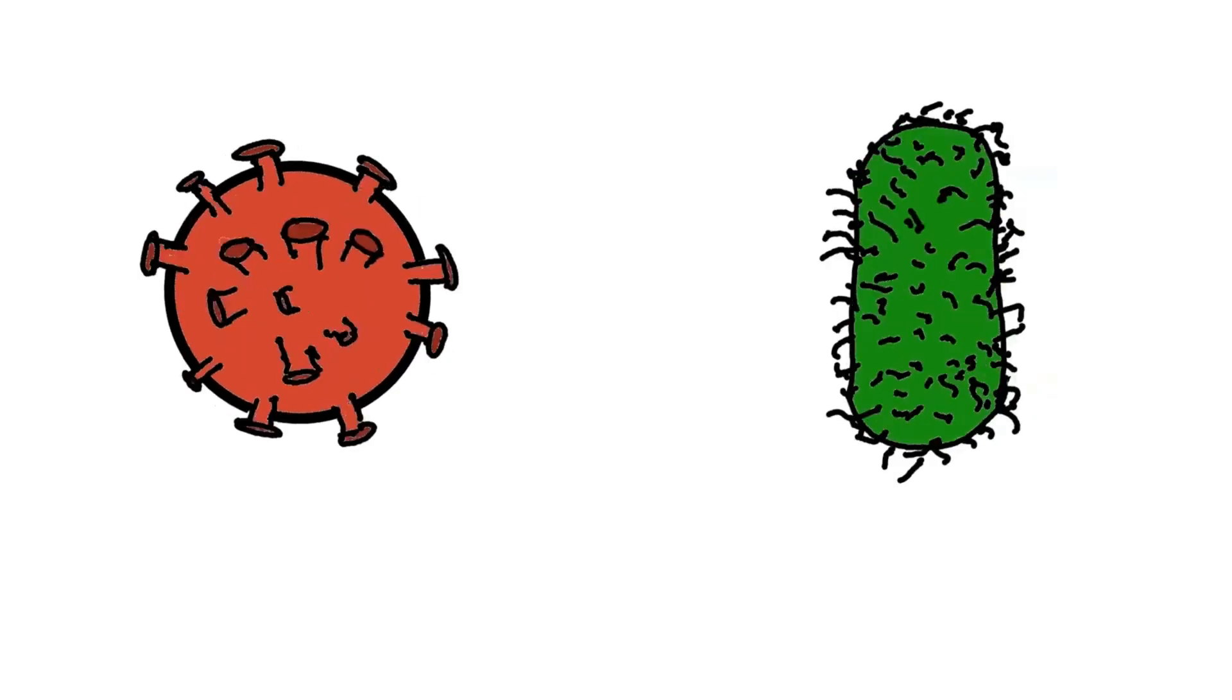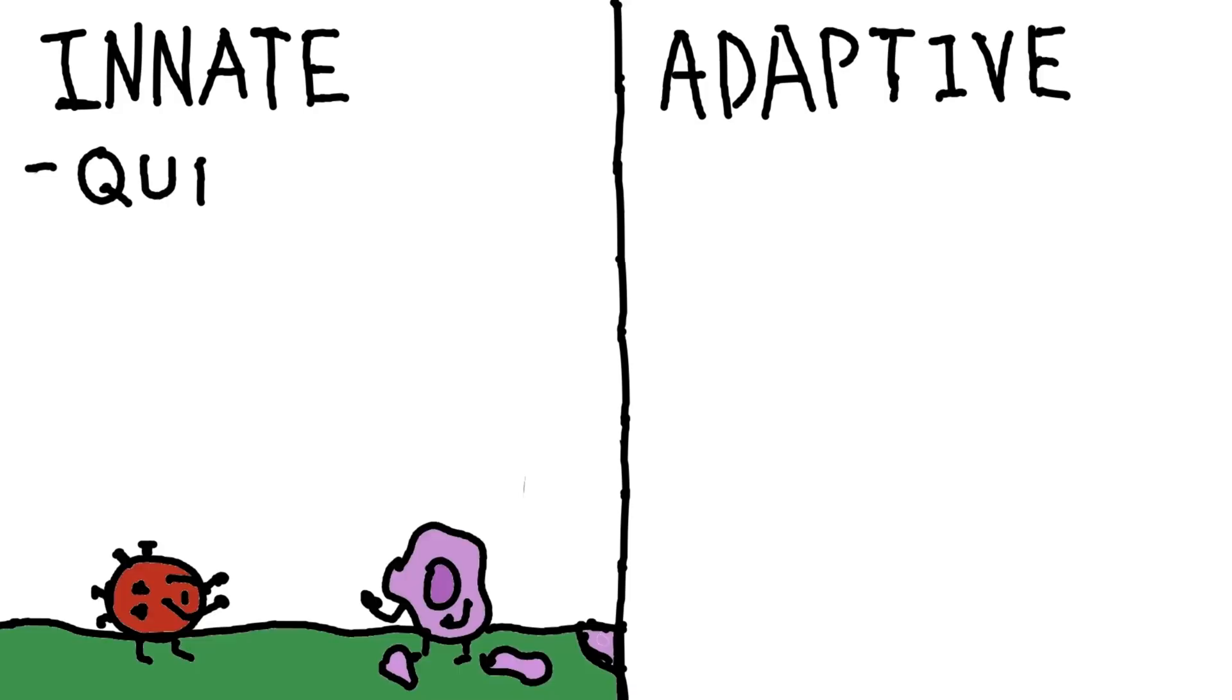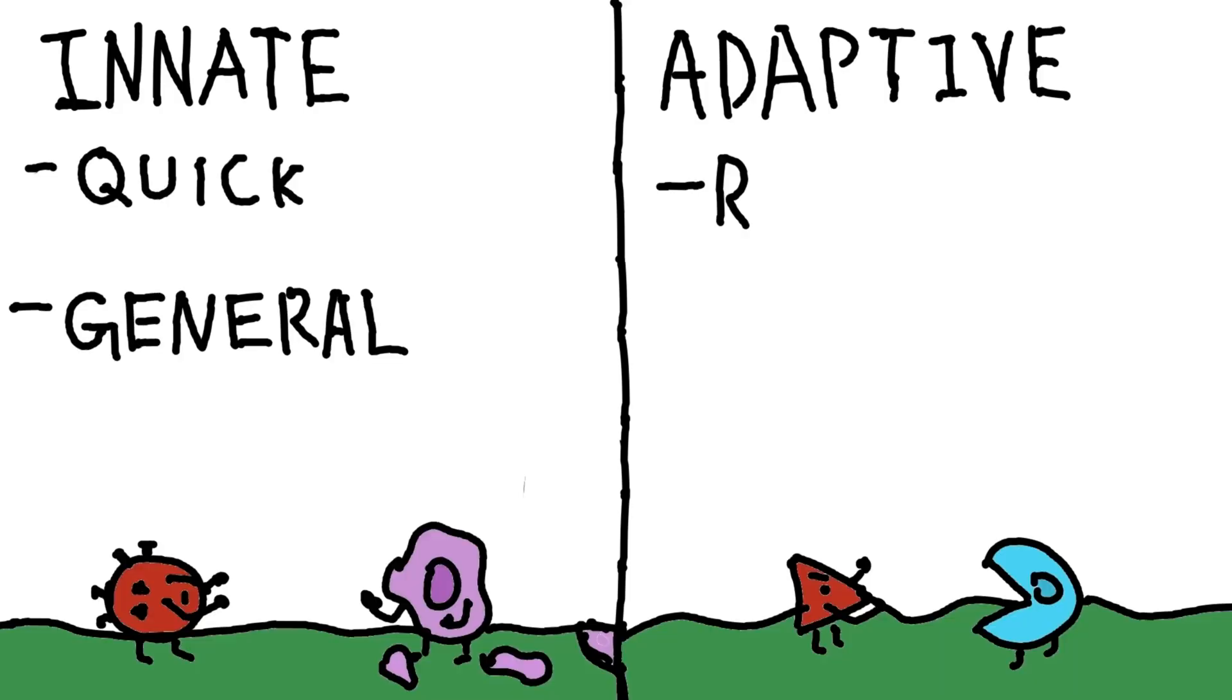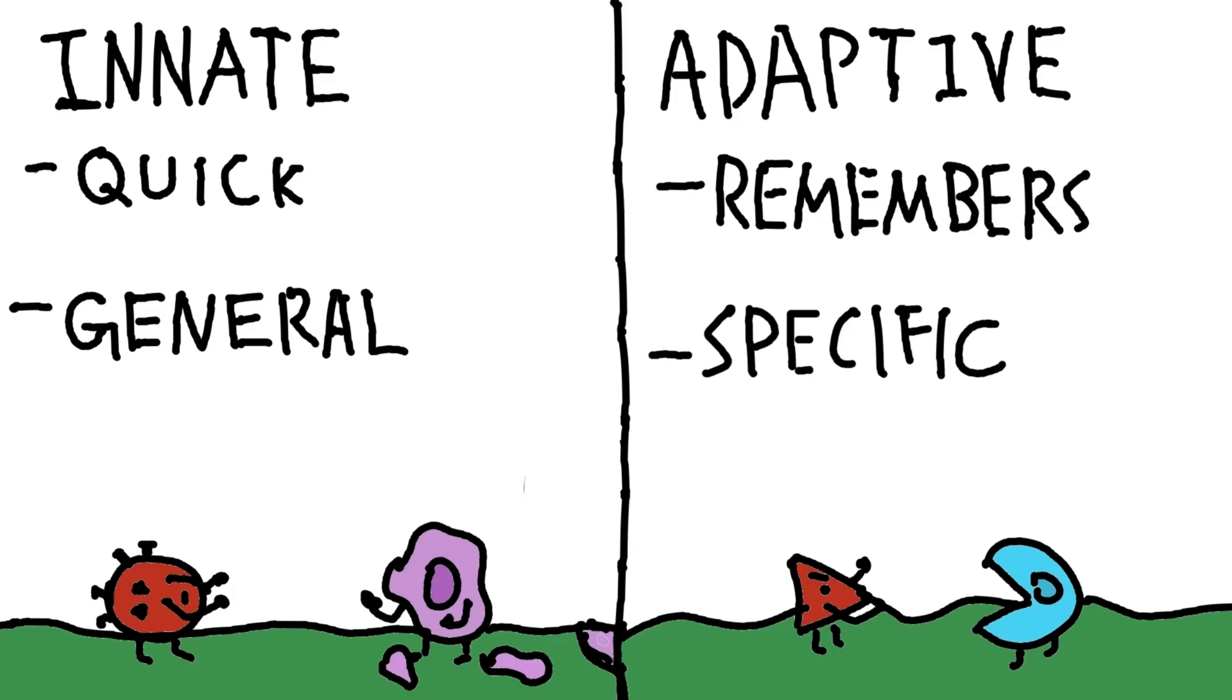Things like viruses, bacteria, and other harmful invaders. There are two main parts of the immune system: the innate immune system, which responds quickly but non-specifically, and the adaptive immune system, which learns to recognize and remember specific threats.